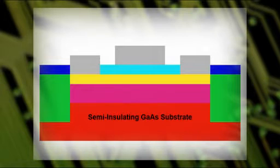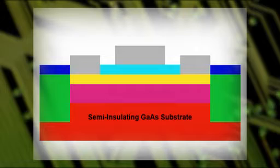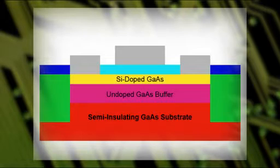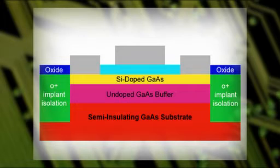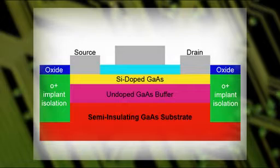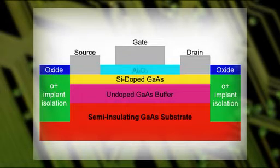The device structure consists of a semi-insulating gallium arsenide substrate, undoped gallium arsenide buffer, silicon-doped gallium arsenide, oakless implant isolation, oxide layer, source and drain contacts, gate contact, and aluminium oxide.